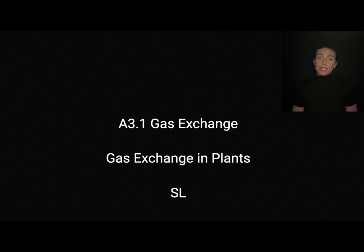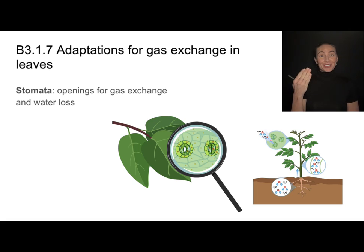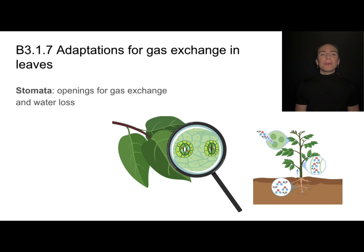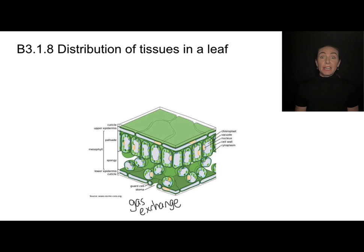In this video we'll be focusing on gas exchange in plants — this is the standard level or core material. On the underside of leaves you'll notice very small openings called stomata — stoma singular, stomata plural. These are openings that allow air to come in or out. One consequence of having them open is that the plant will experience water loss, but we want to keep our eye on these stomata as areas of exchange for those gases. Here they are in this side view — these stomata are openings and they're really helpful for gas exchange.